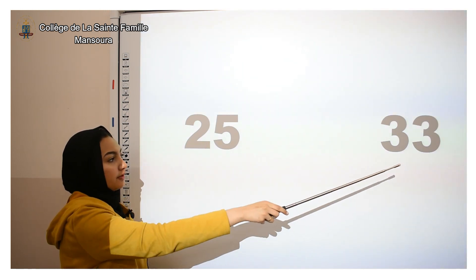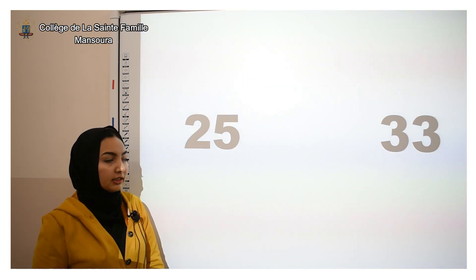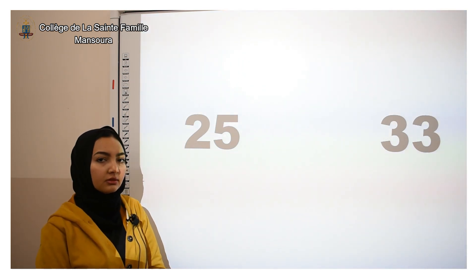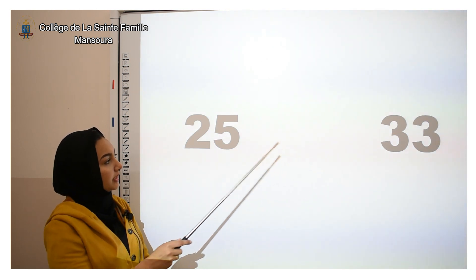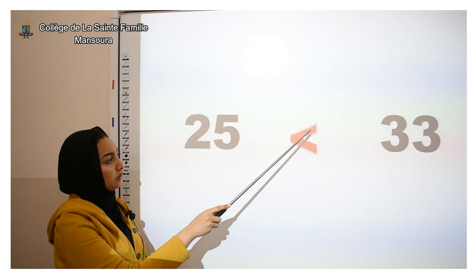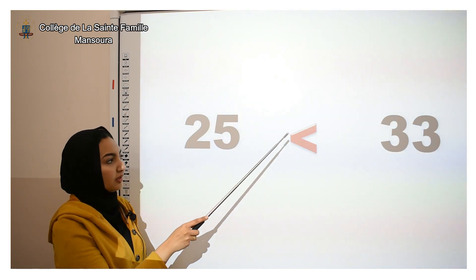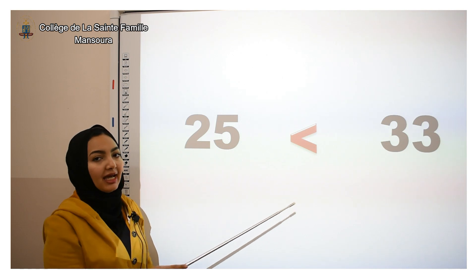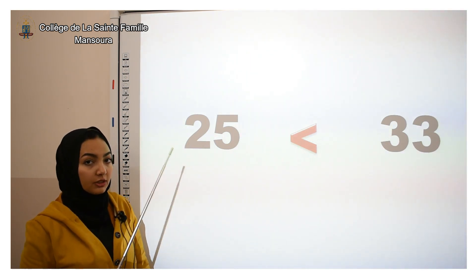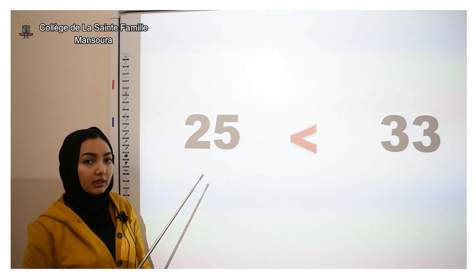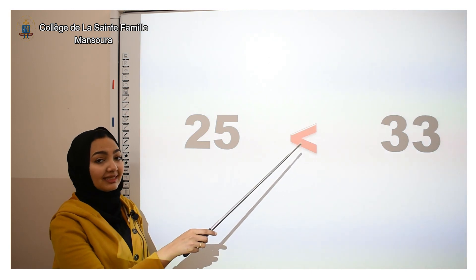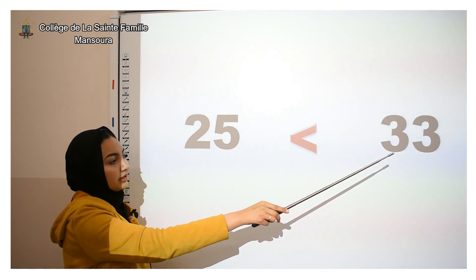Twenty-five and thirty-three — it's your turn. Tell me which one is greater. Yes, thirty-three is greater than twenty-five. So Mr. Alligator's mouth will face the number that has more. How can we read this? We start with the smaller number, so we will say: twenty-five is less than thirty-three.